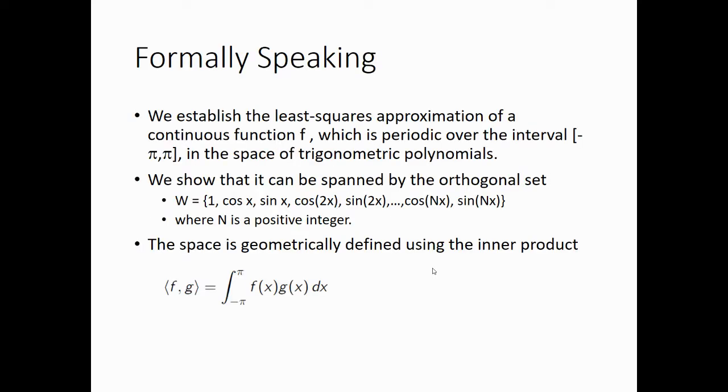So, that's it for the math is fun portion of our lecture. Let's see some more of the advanced mathematics behind this idea, and we'll start looking at this formally. We established the least squares approximation of a continuous function f, which is periodic over the interval minus pi to pi, in the space of the trigonometric polynomials. We showed that it can be spanned by the orthogonal set 1, cosine x, sine x, cosine 2x, sine 2x, all the way up to cosine nx, sine nx, where n is some positive integer. And we can define that space geometrically using the inner product. Any continuous function on f in the interval minus pi to pi can be approximated by linear combinations of the elements from set w, as closely as needed with sufficiently large value of n. We can also construct an orthonormal basis.